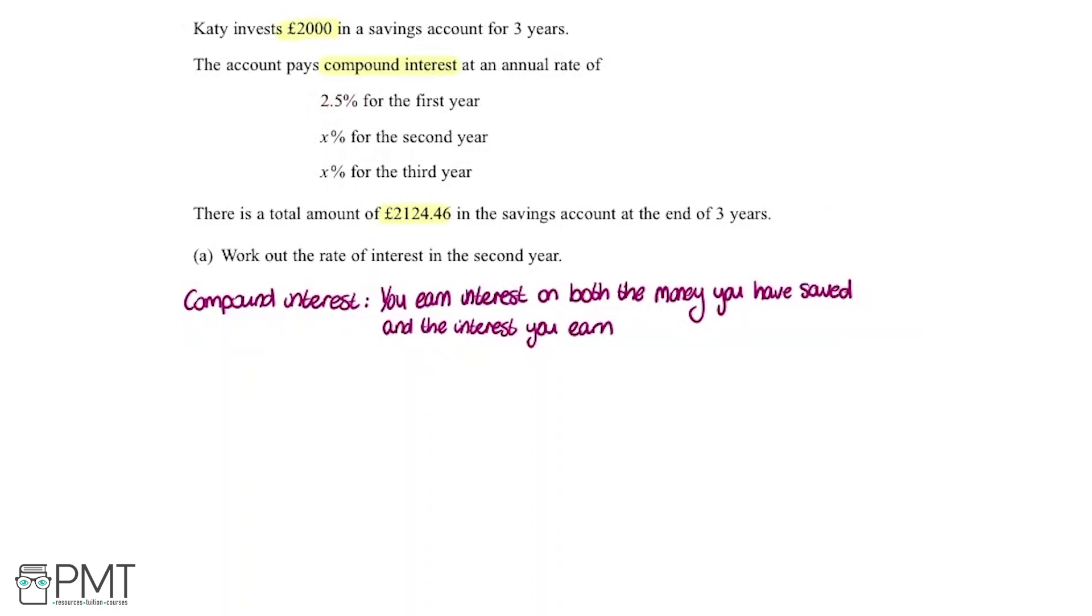For the second year, all of that money is essentially put back in the pot. This interest is applied to all of the money, so £2,000 and the interest earned in the previous year. This is different from simple interest, when each year the interest is only applied to the original amount, so it would only be applied to the £2,000 here.